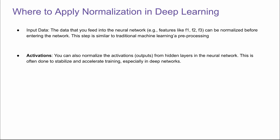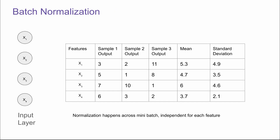Where to apply normalization in deep learning? Usually you can normalize input data — for example, the data that you feed into a neural network can be normalized before entering the network, which is basically preprocessing. The next place is activations, which is more relevant to our talk today. We can also normalize the activations, which are outputs from the hidden layer neurons in the neural network. This is often done to stabilize and accelerate training, especially in deep networks. So first, let's go through batch normalization.